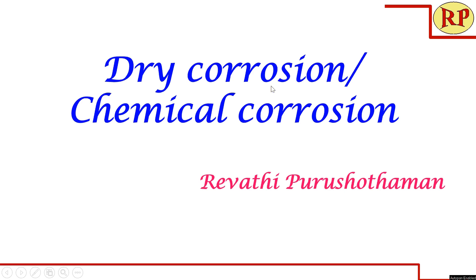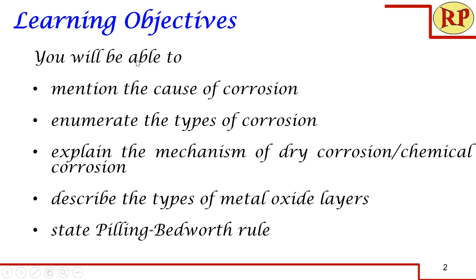Welcome to another session on corrosion. Today we are going to look into dry corrosion, which is also called chemical corrosion. At the end of the session you will be able to mention the cause of corrosion, enumerate the types of corrosion, explain the mechanism of dry corrosion, describe the types of metal oxide layers, and also state Pilling-Bedward's rule.